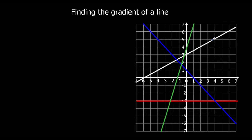The white one first. For every 1 we go across, how far are we going up? Well, if we go across 2, we're going up 1. So for every 1 we go across, we're going up half. The gradient of the white line is half, so I'm going to write m equals half.